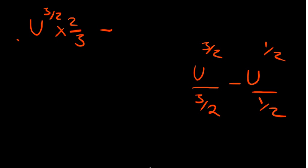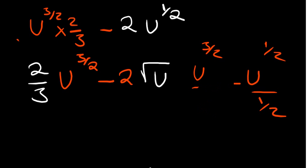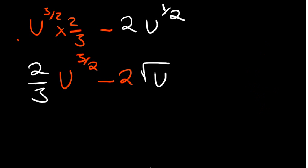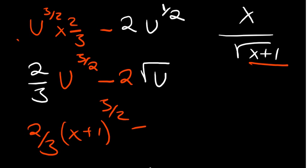Since u to the power 1 over 2 is the same as the square root of u, and recalling that our u was x plus 1, we substitute back. Our final answer is 2 over 3 times (x plus 1) to the power 3 over 2, minus 2 times the square root of x plus 1, plus c. So this is our integral for that expression.